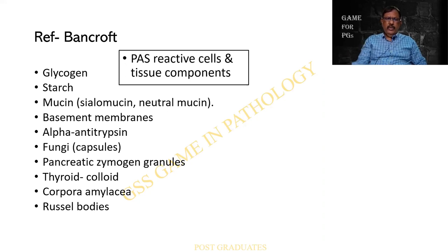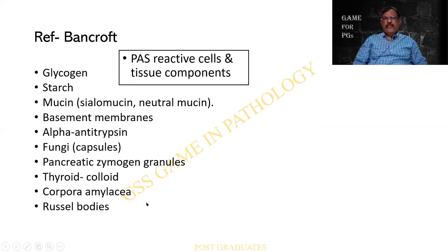Bancroft's list is regarding the component that takes up the special stain. It can be Glycogen, Starch, Mucin — which can be Sialomucin or Neutral Mucin — Basement Membrane, Alpha-Antitrypsin, Fungi, Granules, Colloid, Corpora Amylacea, and Russell's Bodies. These are not specific diagnoses, but components which take up the special stain.